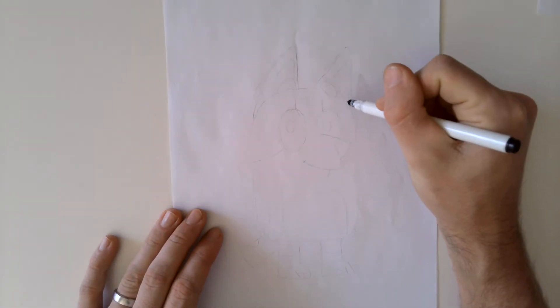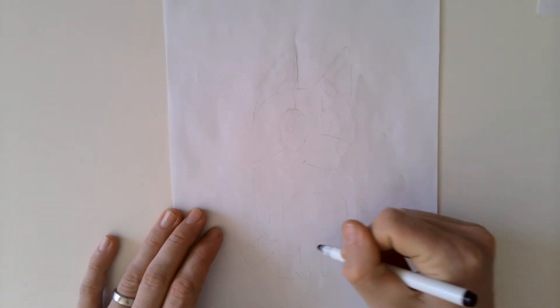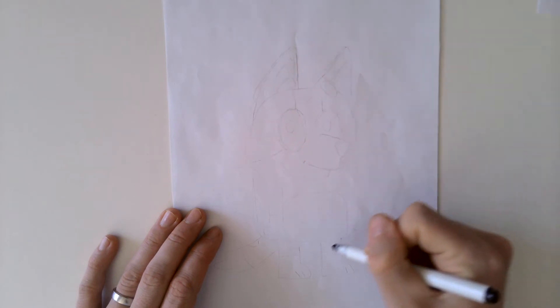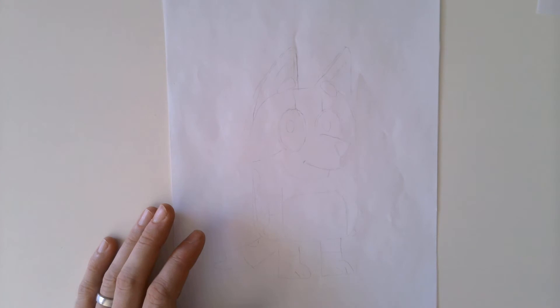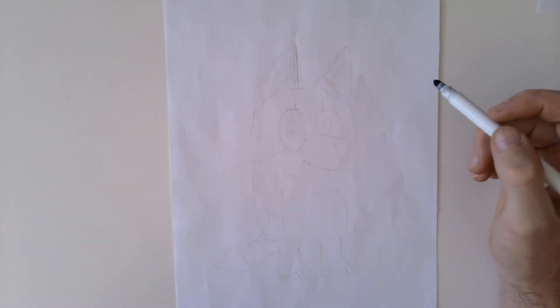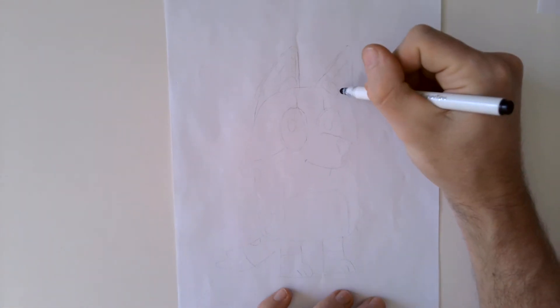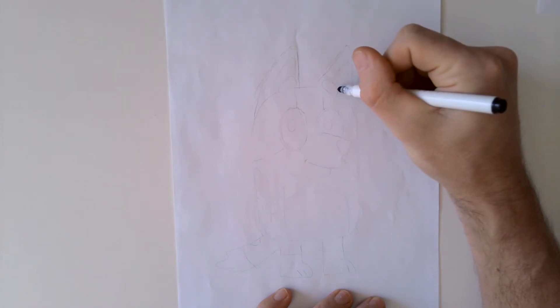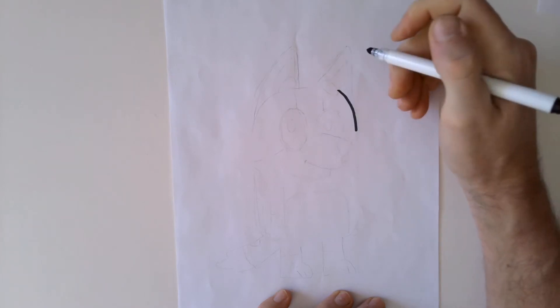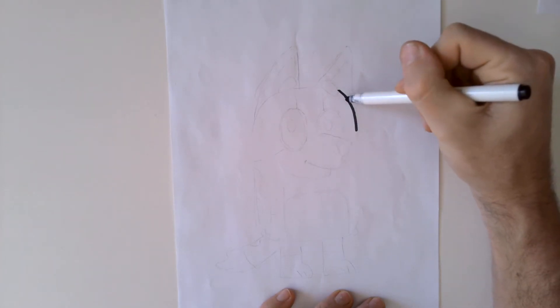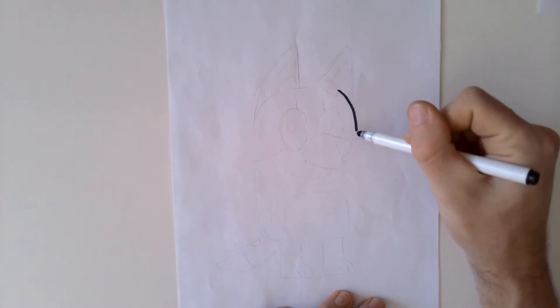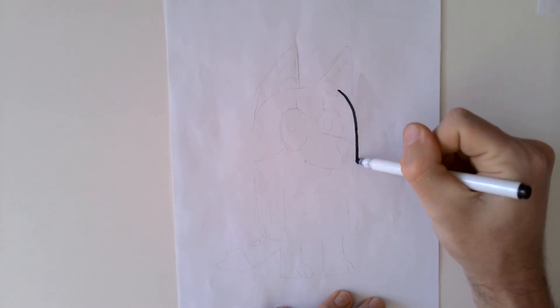We're going to start by drawing the outline of Bingo's body. It's kind of like a rectangle, except it's a bit curved at the top. I guess it looks like a bread loaf. So we're going to start up here, go around a little bit before we get to the straight part. This is the top of Bingo's head curving around there. We're going to go around a little bit then we'll come down like this.